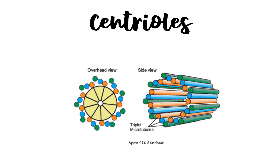Animals and many unicellular organisms have hollow and cylindrical organelles known as centrioles. Each centriole is made of nine triplets of microtubules, which are also made up of tubulin protein. Animal cells have two centrioles located near the exterior surface of the nucleus. The two centrioles are collectively called a centrosome. Their function is to help in the formation of spindle fibers during cell division. In some cells, centrioles are also involved in the formation of cilia and flagella.